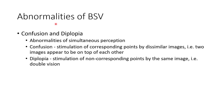Now let us discuss the abnormalities of BSV: confusion and diplopia. These are abnormalities of simultaneous perception. Confusion is stimulation of corresponding points by dissimilar images — that is, two images appear to be on top of each other. Diplopia is stimulation of non-corresponding points by the same object, resulting in a double vision.